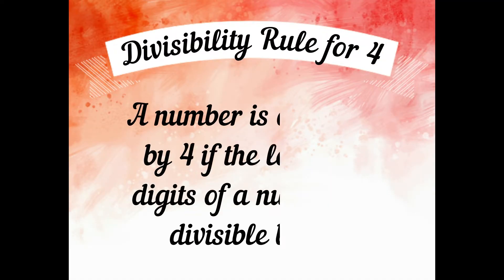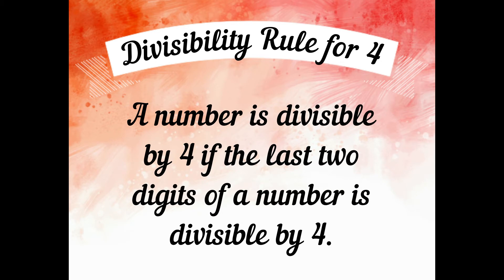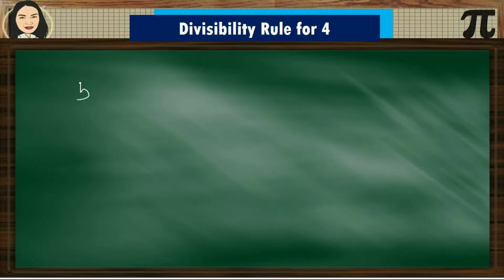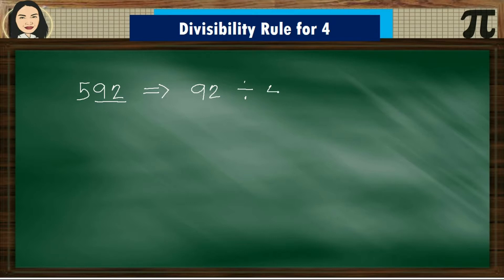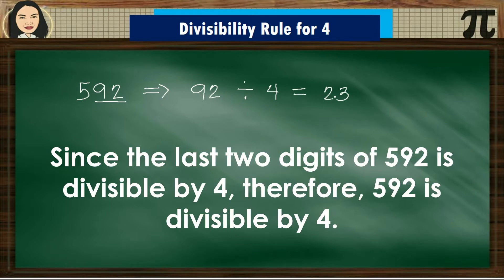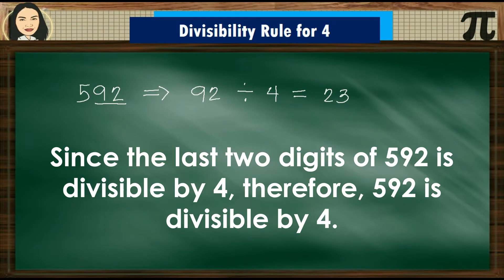Divisibility Rule for 4: A number is divisible by 4 if the last 2 digits of the number are divisible by 4. So we have 592, and the last 2 digits are 92. Since the last 2 digits of 592 are divisible by 4, therefore 592 is divisible by 4.